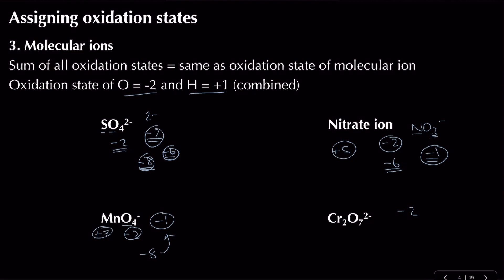For dichromate (Cr₂O₇²⁻), oxygen is −2 and there are seven of them: 7 × −2 = −14. To get from −14 to −2, we need +12. Since that +12 is split across two chromium atoms, each chromium has an oxidation state of +6. So chromium is +6, oxygen is −2, and the overall oxidation state is −2.